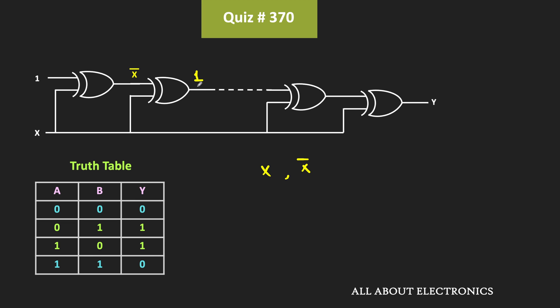After every 2 XOR gates, the output of the circuit is equal to 1, and this pattern repeats. That means after 4 XOR gates the output is 1, and likewise after 20 XOR gates the output is also equal to 1.